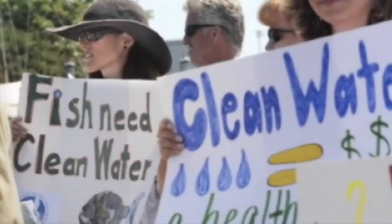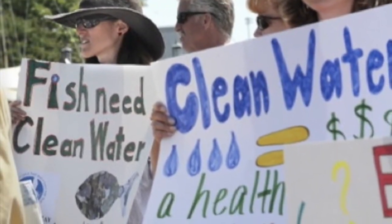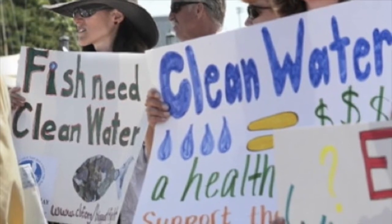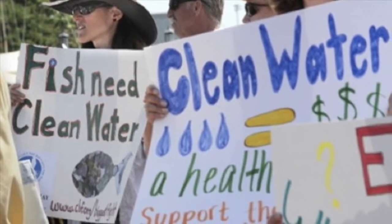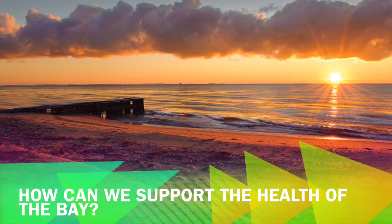The good news is that dead zones are fixable. Over 50 different waterways worldwide have seen dead zones shrink or disappear due to the efforts of cleanup projects. Likewise, in 2012, the Chesapeake saw the smallest dead zone since scientific recordings began. In 2013, scientists report that the bay is on track for another smaller-than-average dead zone.